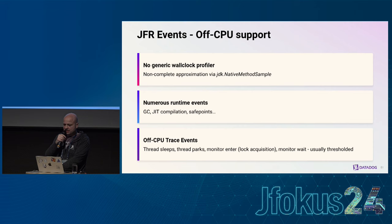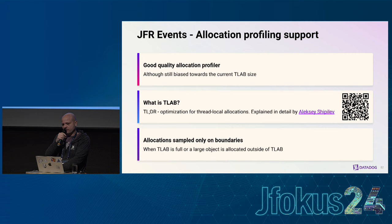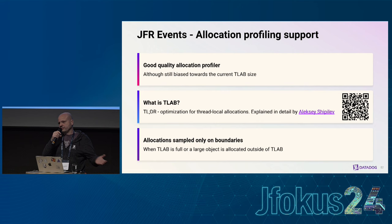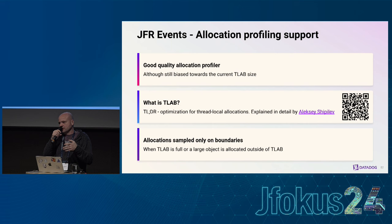JFR is generous with low-level events that can be used to reconstruct off-CPU activity — GC, compilations, safepoints, thread parking, and more. You can even set thresholds to avoid being swamped with events. For allocation profiling, JFR provides a pretty good quality profiler, but it is TLAB-size biased. The TLAB (Thread-Local Allocation Buffer) optimization means sampling happens at TLAB boundaries — when the TLAB fills up, say at 256K, we take a sample. Allocations too large for the TLAB are sampled individually. In practice the skew is not causing that many troubles.